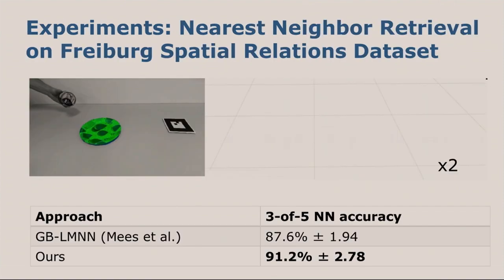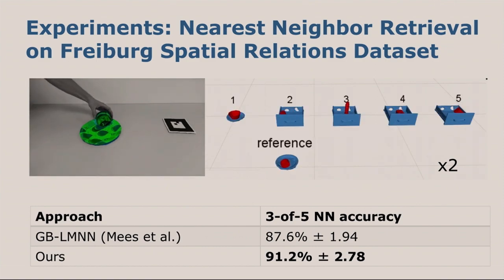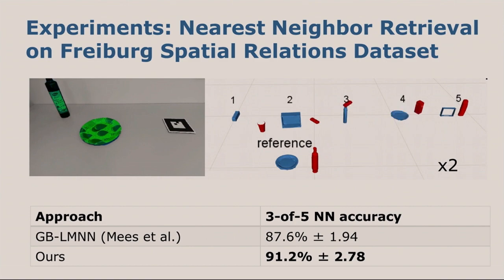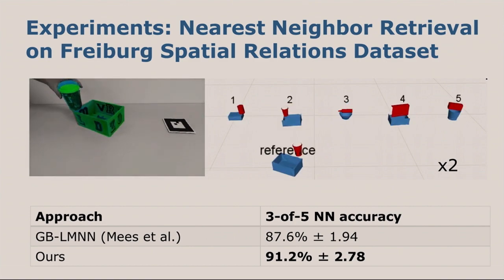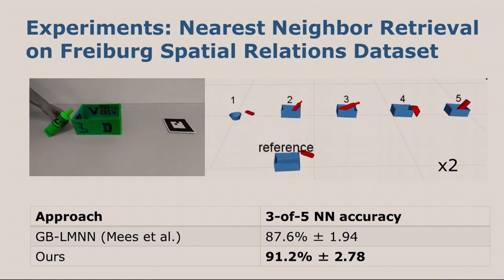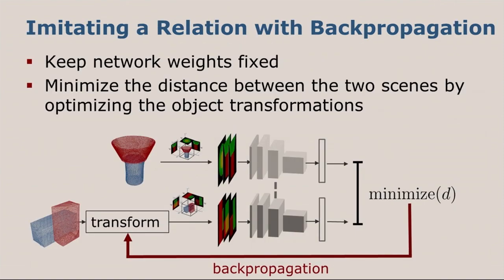Having learned this metric, there's a question how we can evaluate it. As it's a metric, we can compute the nearest neighbors based on the distance in our metric. On the left in the video, we demonstrate a reference relation. On the right, you can see the scenes that we retrieve, the five nearest neighbors we retrieve from the Freiburg spatial relations dataset. We can now compute the three or five nearest neighbor accuracy, counting a retrieval as successful if at least three out of these five neighbors are labeled similar. With this metric, we improve upon the previous results, which relied on hand-engineered features, which suggests that we can now leverage this learned metric to also imitate relations with new objects.